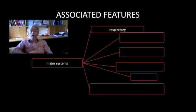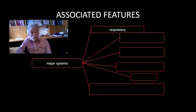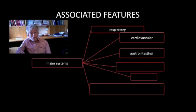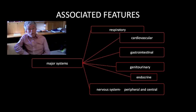Finally, because rheumatic diseases can involve any or all of the organ systems, it is important that a routine systems inquiry also be undertaken, asking about symptoms in the respiratory system, the cardiovascular system, the gastrointestinal system, the genitourinary system, the endocrine system, and the neurological system, both peripheral and central.